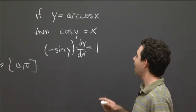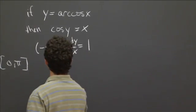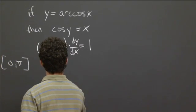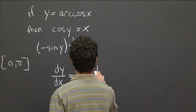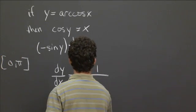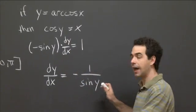Now dy dx is the thing we're after, so we solve this equation for dy dx. And we get dy dx is equal to minus 1 divided by sine y. Which is fine.